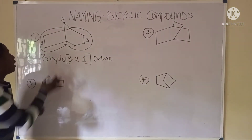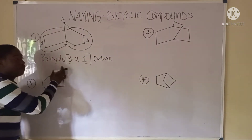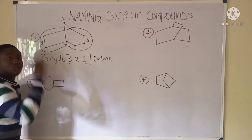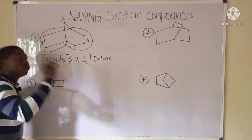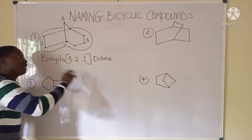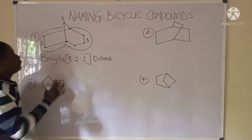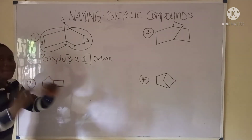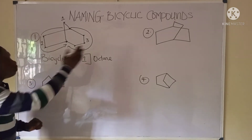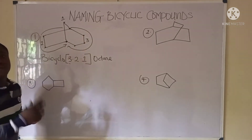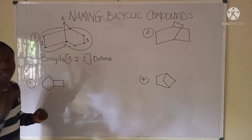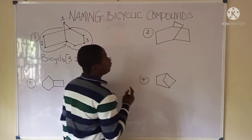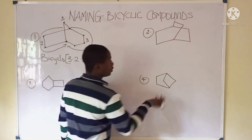So the name of this compound is bicyclo[3.2.1]octane.